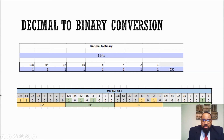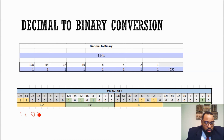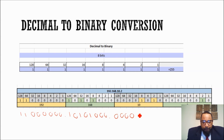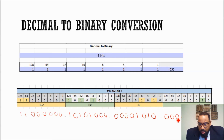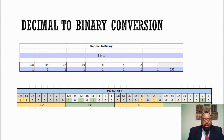So if we were to write 192.168.10.2 in binary, we have: 11000000.10101000.00001010.00000010. That's your binary conversion for 192.168.10.2. So now we have a basic understanding of decimal to binary.